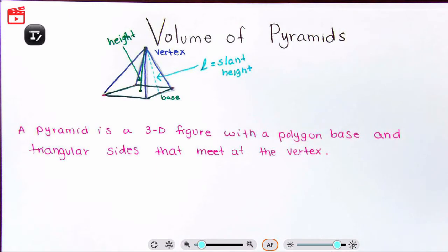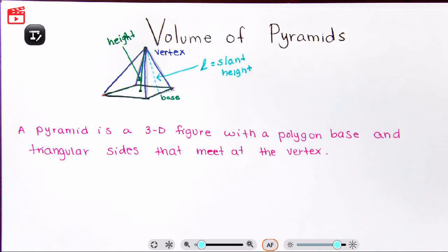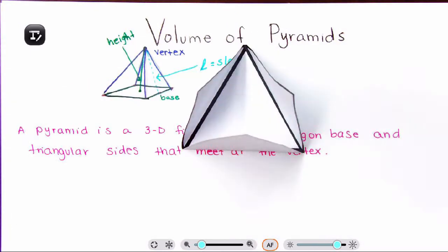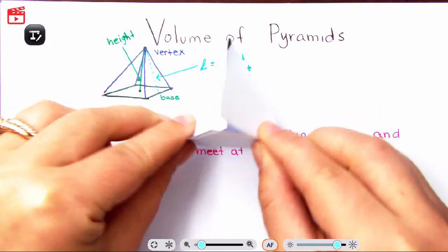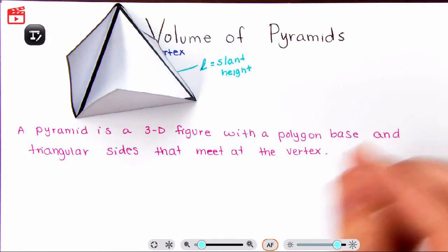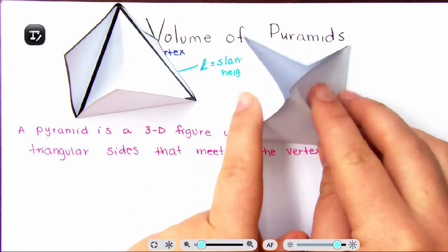When we are calculating the volume of pyramids, you'll notice our formula does not ask for the slant height — it's asking for the height, the perpendicular distance from the base to the vertex. But some questions will give you the slant height instead. I've actually made some physical pyramids here to show you the difference.